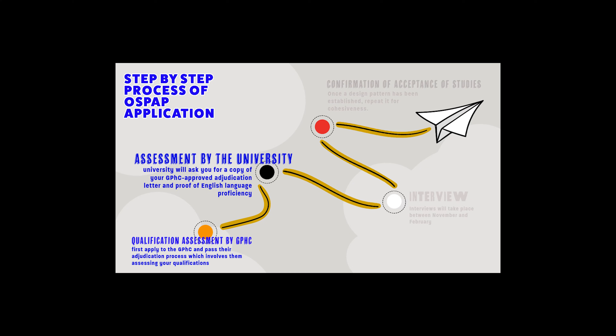When applying, you will select a preferred institution from the four universities: University of Sunderland, University of Aston, University of Brighton, and University of Hertfordshire. You need to do your own research to find which university is right for you. GPhC will then send your application to your preferred institution, which will continue further assessments and send you an application form.